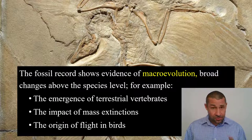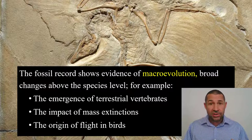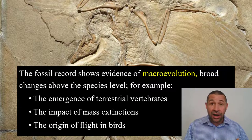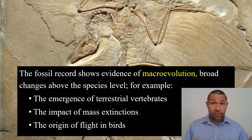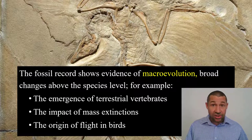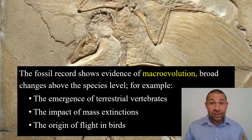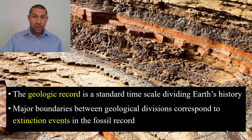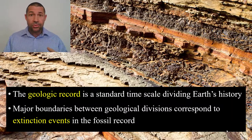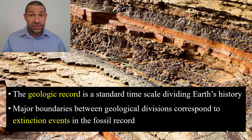In our previous evolution unit, we spent a fair amount of time discussing microevolution — that is to say, small changes in allele frequencies across time and space. Today we're going to be thinking about the other end of the spectrum: macroevolution. This refers to sweeping changes we observe in the fossil record above the species level, such as the colonization of land by tetrapods or the evolution of flight in the theropods. We recognize that the fossil record is bound within the geologic record, which is systematically divided by geologists into units like eons, eras, and epochs.